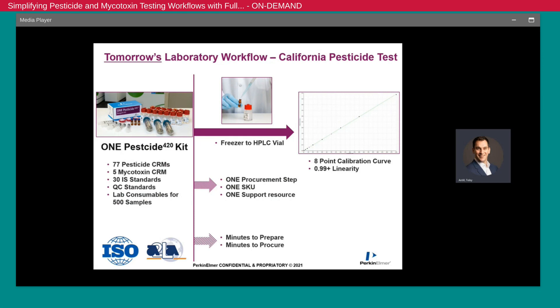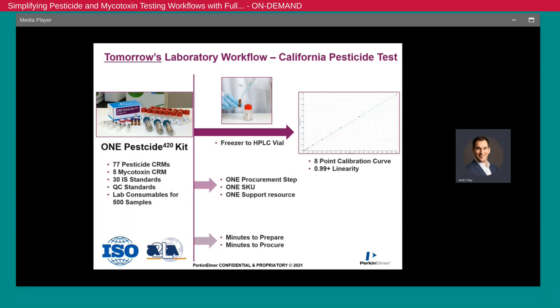At the bench level, it's very straightforward. You simply take the vial out of the freezer, let it come to room temperature, and inject it into the LC vial for the instrument calibration. This can be used across all matrices and is continually being evaluated to meet all regulatory pesticide testing needs.